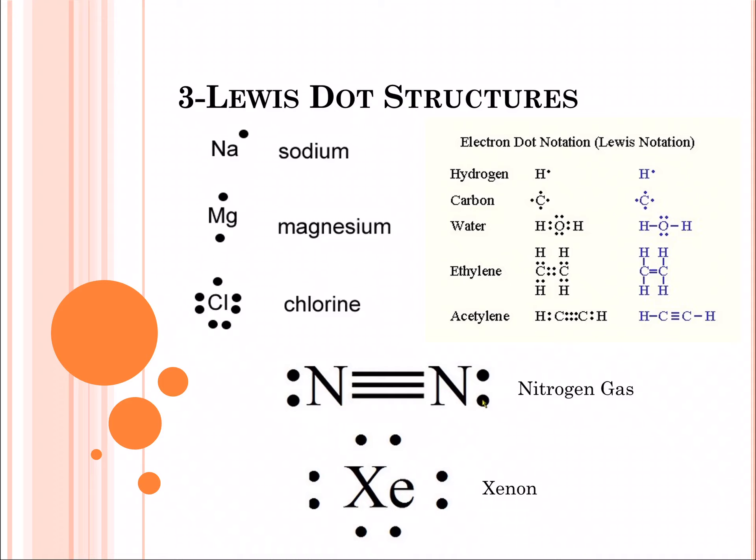What might have struck your attention is that sodium has an electron sitting here. Magnesium seems to have two. Chlorine, which is really close to the end of the periodic table, has seven. If you'll notice, chlorine's atomic number isn't seven, but what we're looking at are the number of electrons only in its outside shell, and there's a pattern to this.